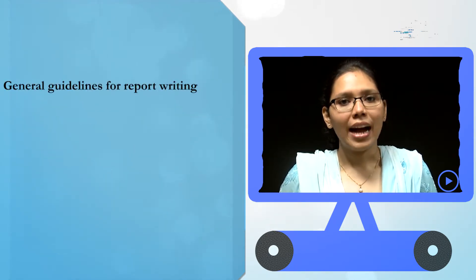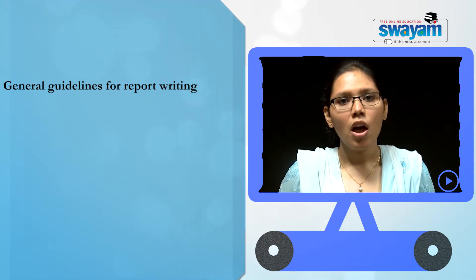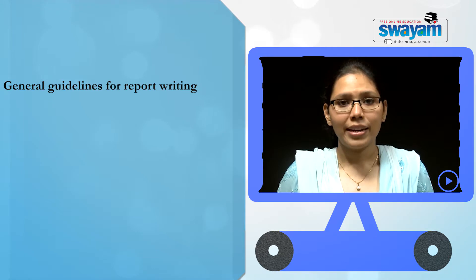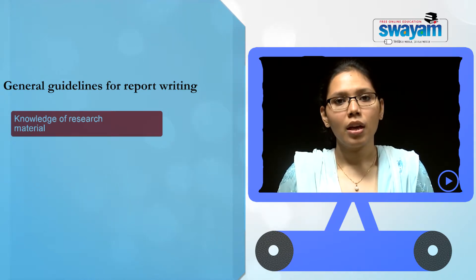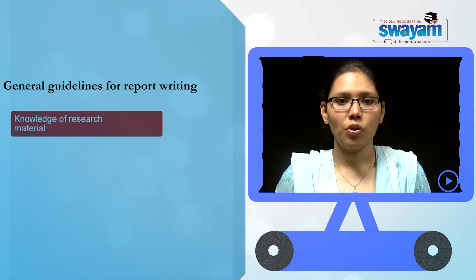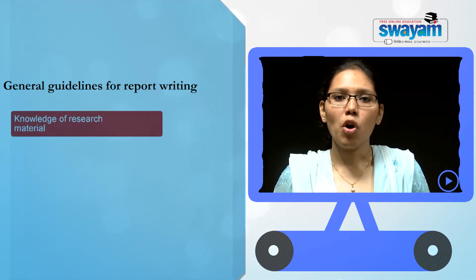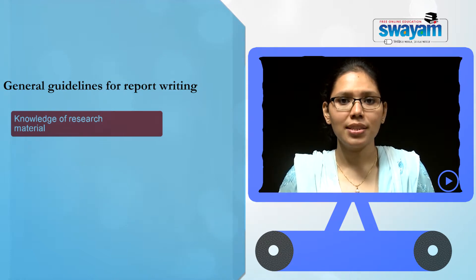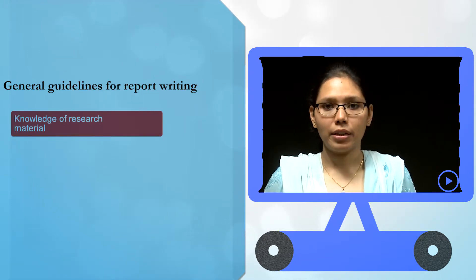There are some basic guidelines for every report writing. The first guideline that a report writer must keep in mind is the knowledge of the research material. The writer must have comprehensive and adequate knowledge of the research area. It forms the backbone of the entire research process and is of vital importance at the time of analysis and interpretation of report writing.